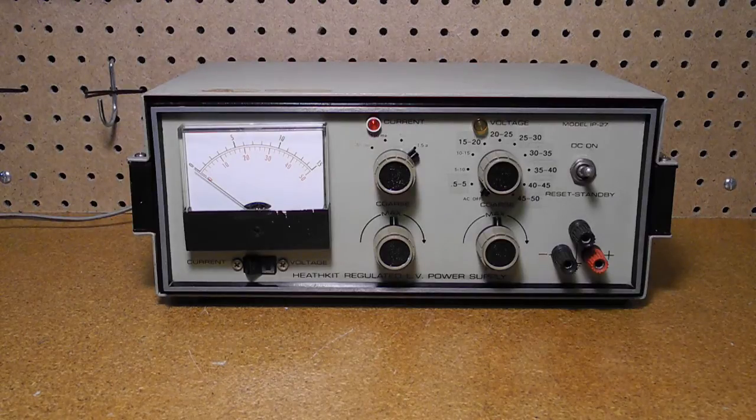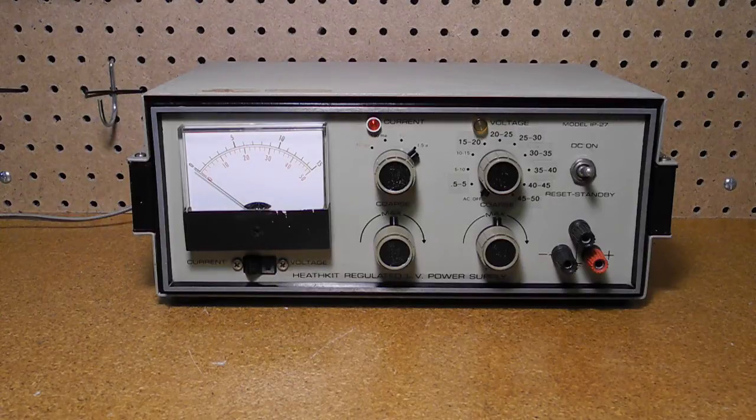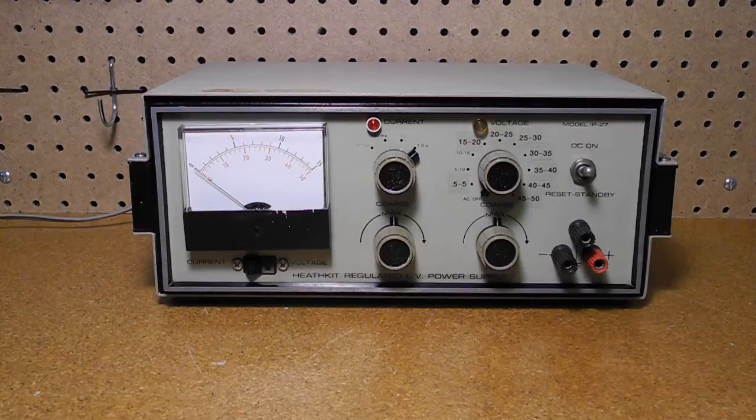My 1971 Heathkit catalog listed at a price of $79.95 and the assembled IPW27 for $125. It was described there as the finest low voltage supply Heath has ever offered.